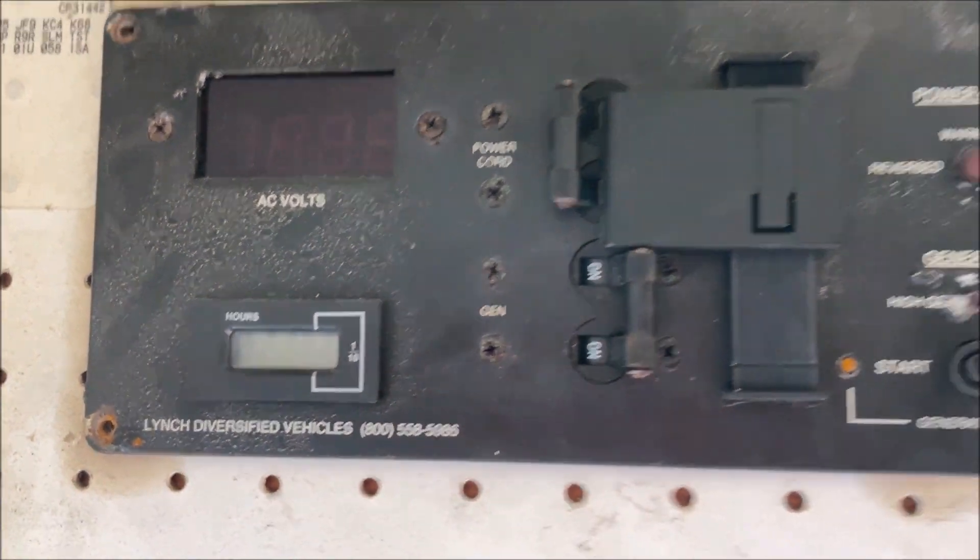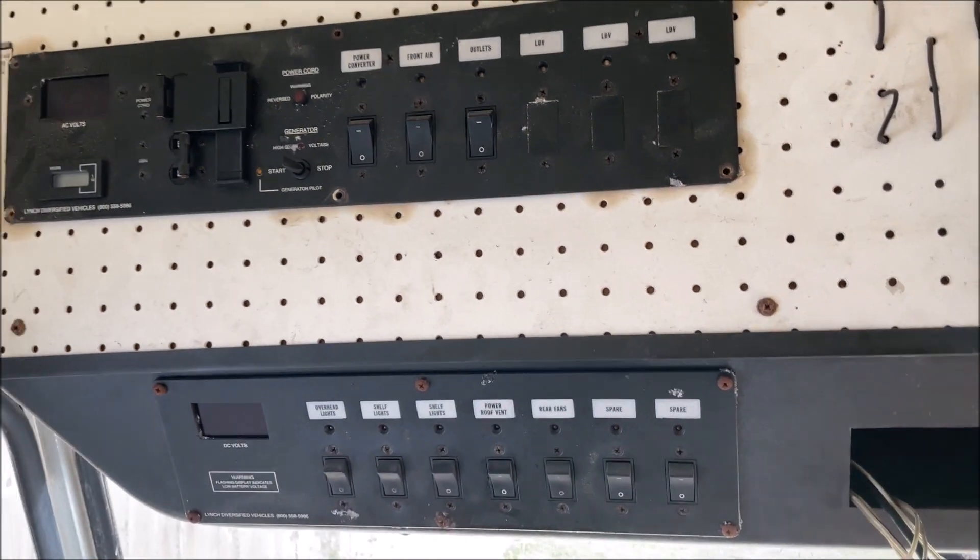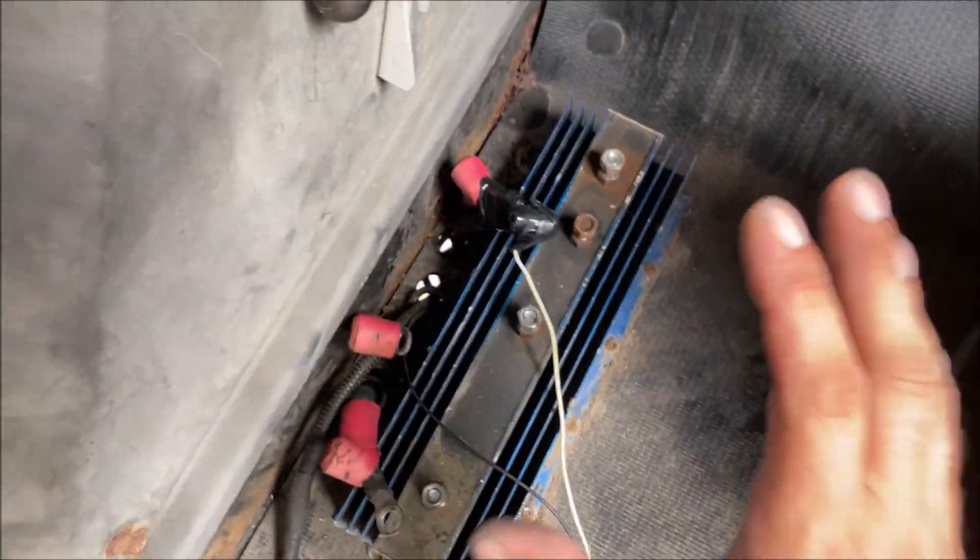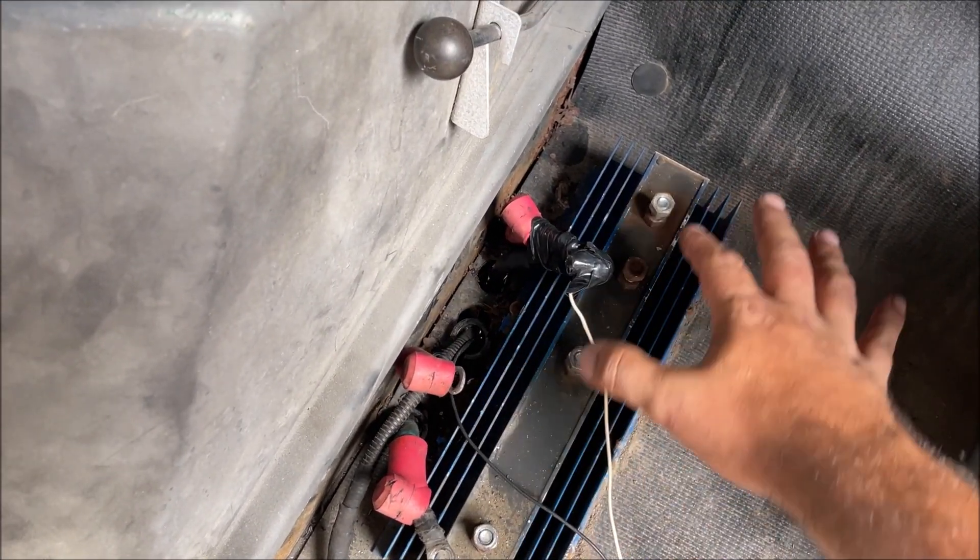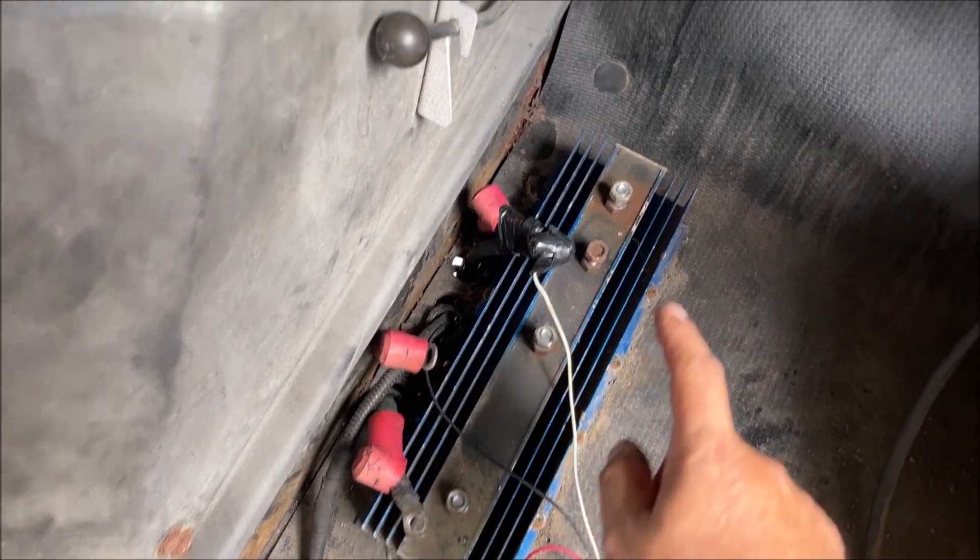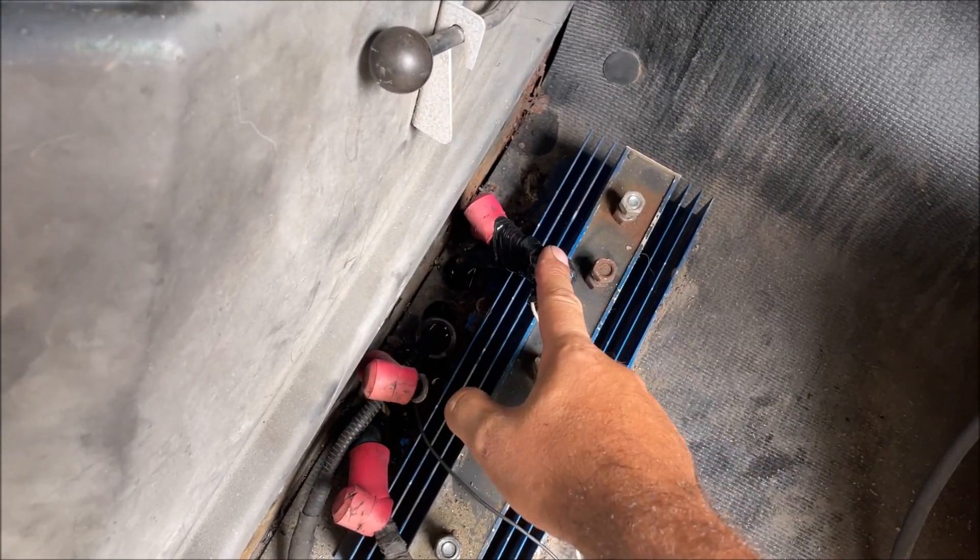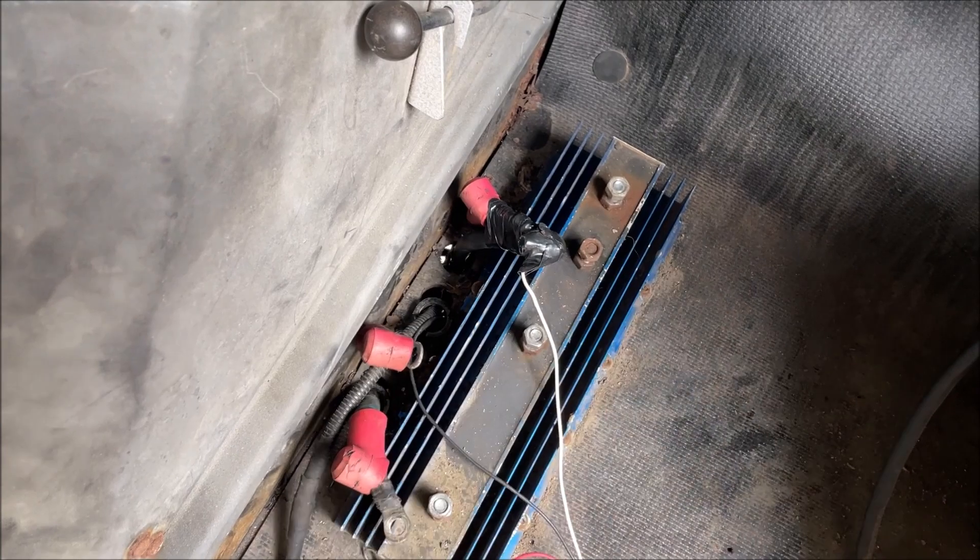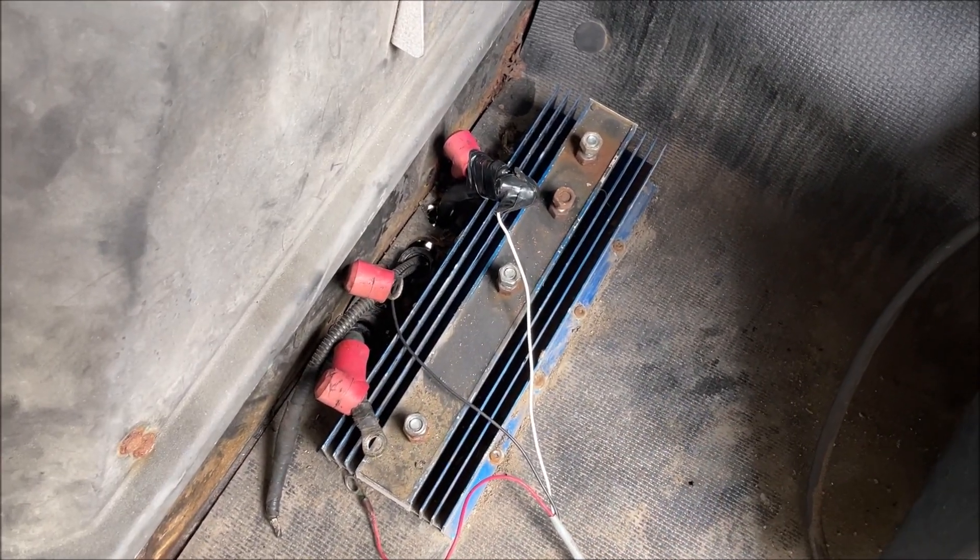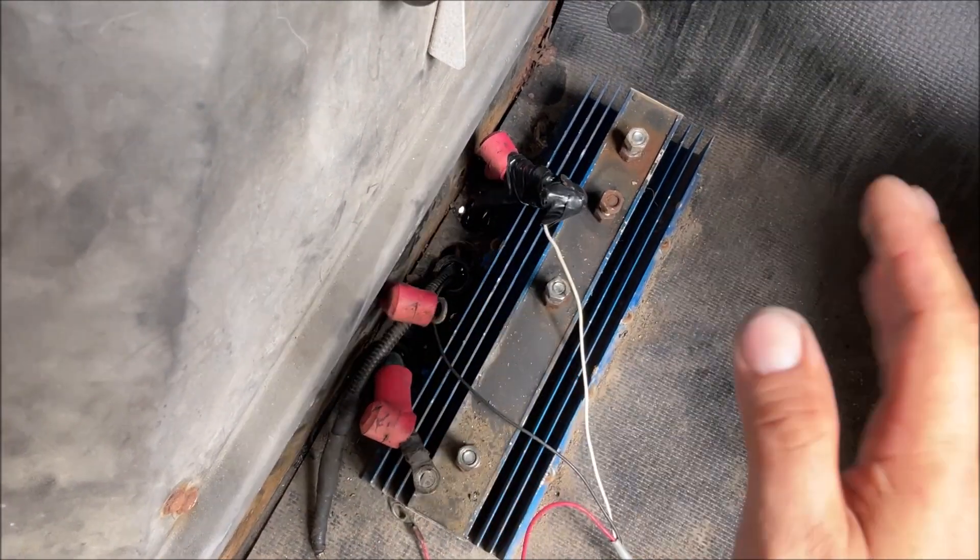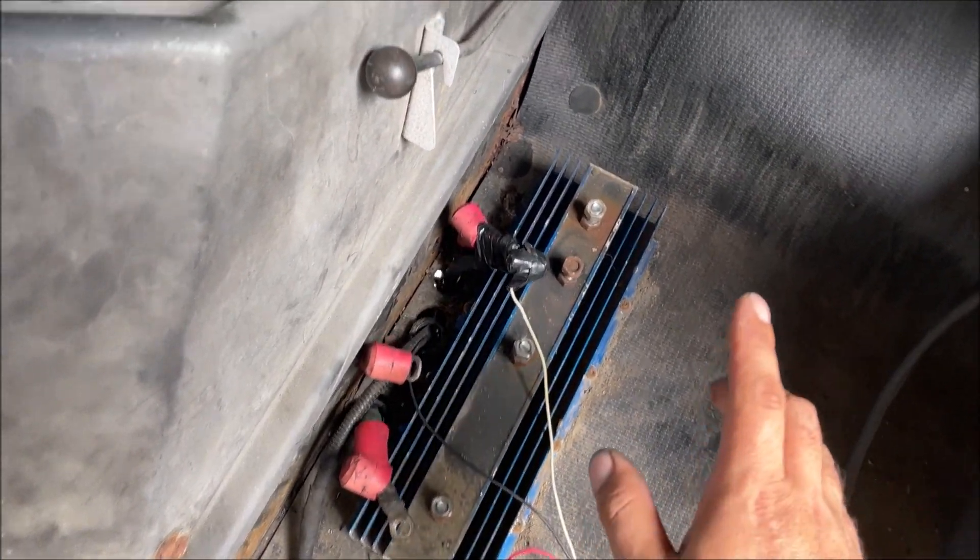So we understand that the battery isolator isolates three different batteries so they can have their three different circuits. But it charges them with one wire from the alternator. And this is a heavy duty 130, 140, 160 amp, I'm not 100% sure. And it splits up that charging. It's going to release heat and it's going to have a little bit of voltage drop.